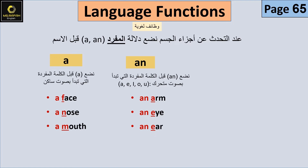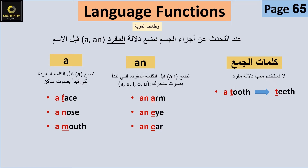So we use 'A' or 'AN' before a word to indicate it is singular. If the word is plural, we do not use 'A' or 'AN'. For example: a tooth → teeth, a foot → feet. Use 'A' before consonant sounds and 'AN' before vowel sounds (A, E, I, O, U). For plurals, no article is used.